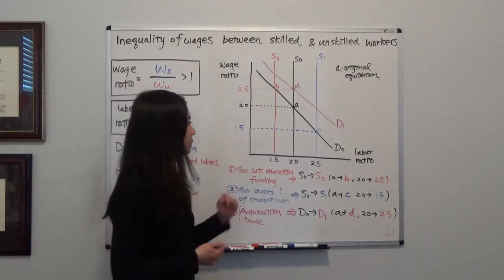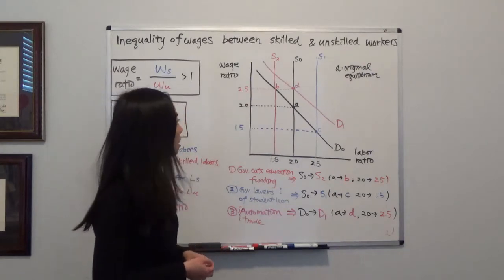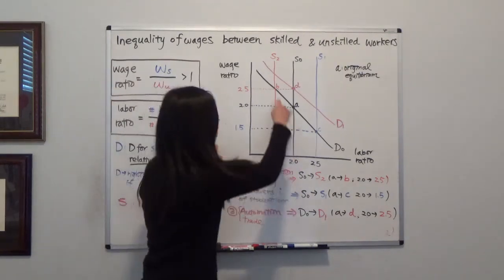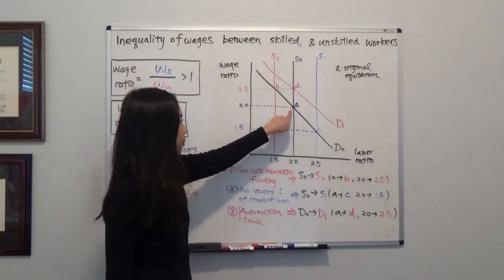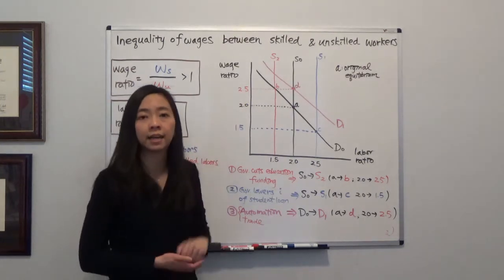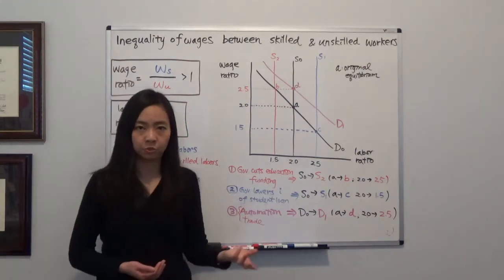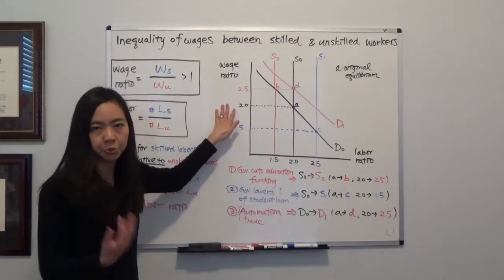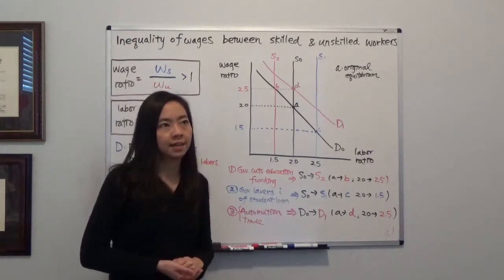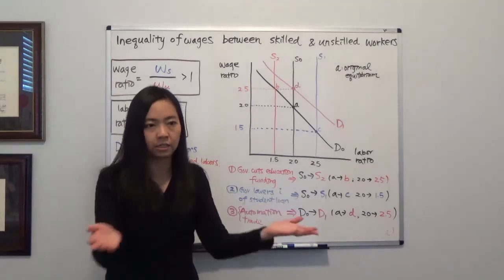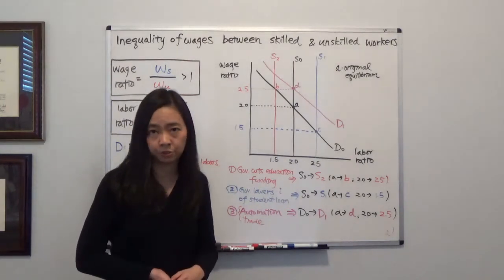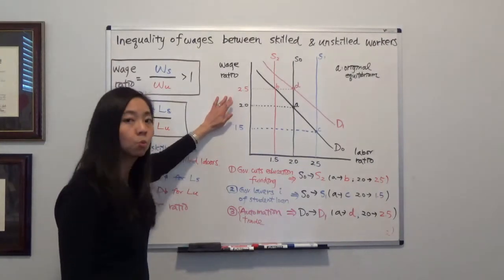In our demand and supply analysis, suppose we start with S0 as our original labor ratio and D0 as our original relative demand. We start at point A, our original equilibrium, where the wage ratio is 2.0 — meaning skilled labor earns twice as much as unskilled labor. In reality, the gap is much larger: many Americans live below the poverty line earning under $25,000 per year for an entire family, while skilled laborers can easily make $80,000 to $100,000 per year.